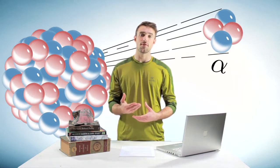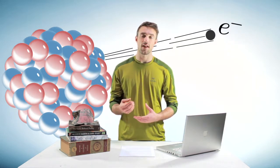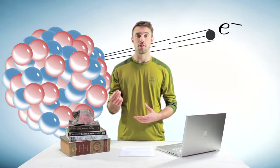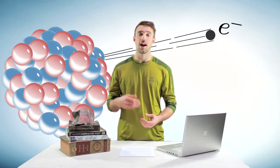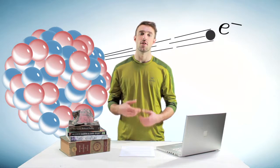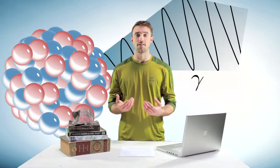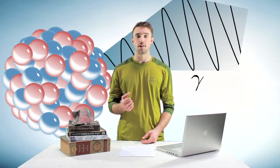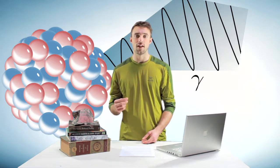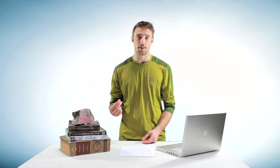Another type of decay is beta decay, and that's simply an electron being emitted. And then there's gamma decay or gamma rays. Gamma rays are emitted as a high energy electromagnetic emission, even more energy than x-rays.